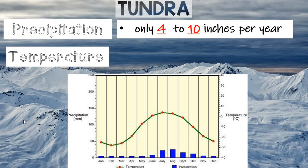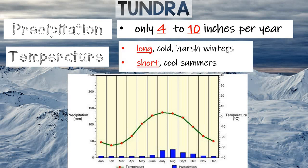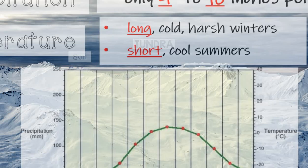Likewise, the temperatures: we have long, cold, harsh winters in the tundra and short, cool summers. Those harsh winters are usually well below zero, as you can see in this graph — temperatures well below zero during the winter time. Then during those short summer months it doesn't get that much warmer. Usually they're pretty cool, with high temperatures in the 50s during the summer months.